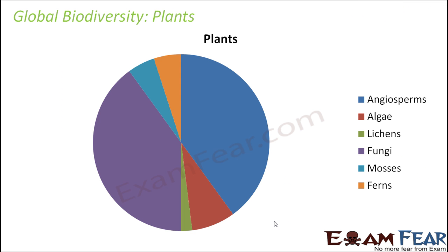In case of plants, angiosperms have a huge variety of species, and the next most species-rich group is fungi. Angiosperms and fungi are the species-rich groups within plants. Other groups — algae, lichens, mosses, and ferns — are also present but less predominant. This covers the global biodiversity in terms of plants and animals. Next, we will look at how we can conserve biodiversity and protect animals from extinction.